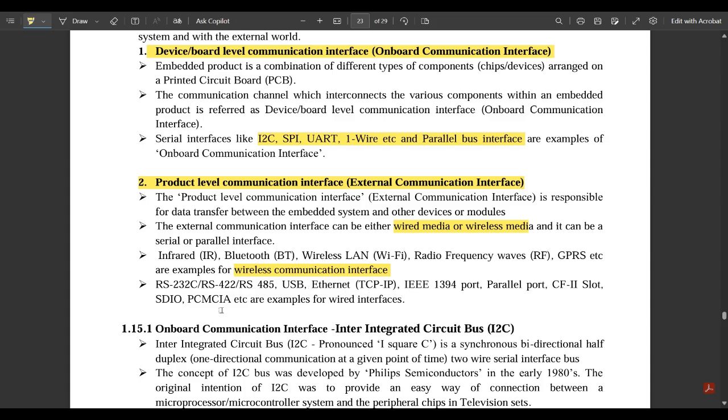RS-232, RS-485, USB, Ethernet cable, parallel ports, CF2 slot, HDIO, and PCMCIA are some examples for wired interfaces. These things have already been discussed in the first three videos; you can go through them.